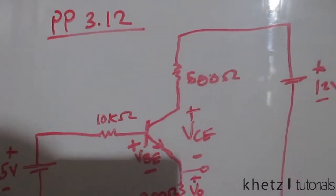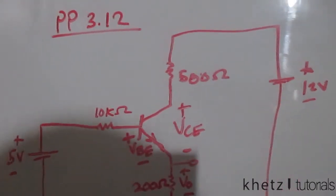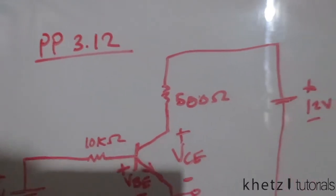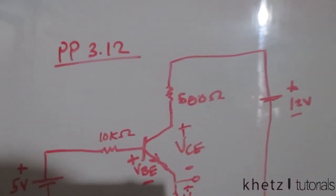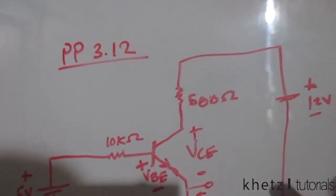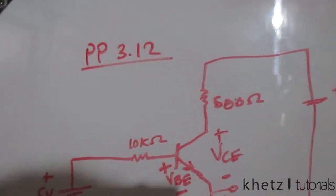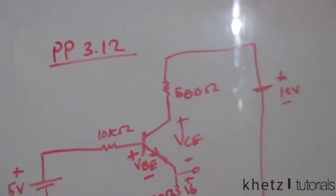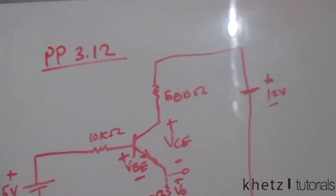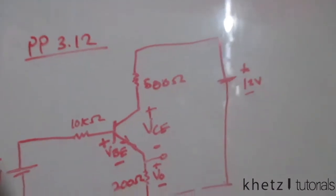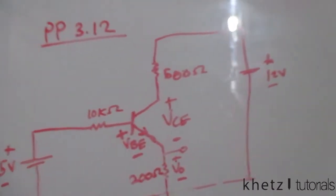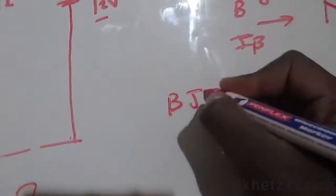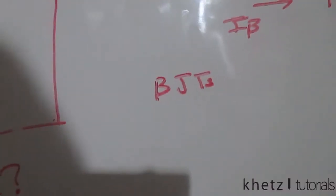Welcome to CAT Tutorials. In this video I'll be covering practice problem 3.12. This unit is 3.9 in the book Fundamentals of Electric Circuits, and it talks about transistors. There are quite a few types of transistors, but this section talks about bipolar junction transistors, or BJTs.